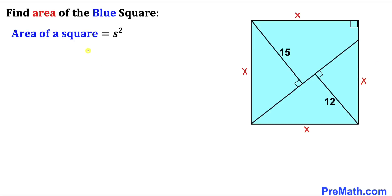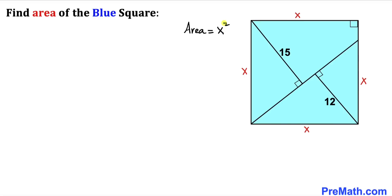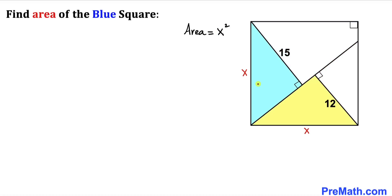Now let's recall the area of square formula: area equals s squared, where s represents the side length. In our case the side length is x, so therefore the area of this blue shaded square is going to be x squared. Our task is now to find the value of x squared.